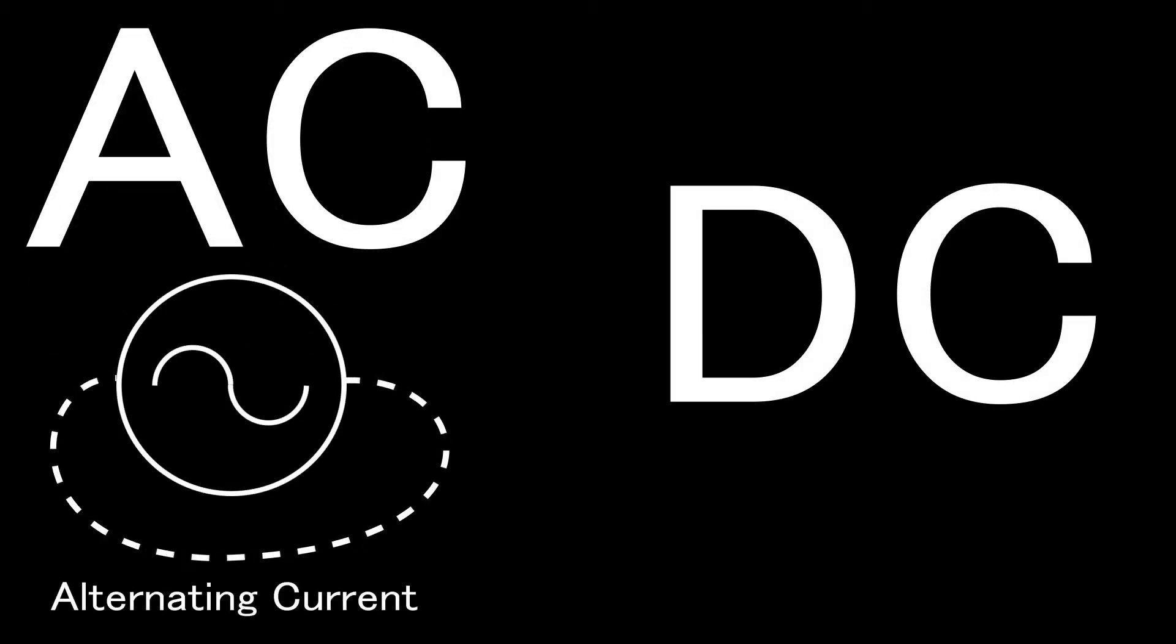AC stands for alternating current. This is where the electron flow switches directions many times per second instead of only flowing in just one direction. This is the type of current that comes out of wall outlets.